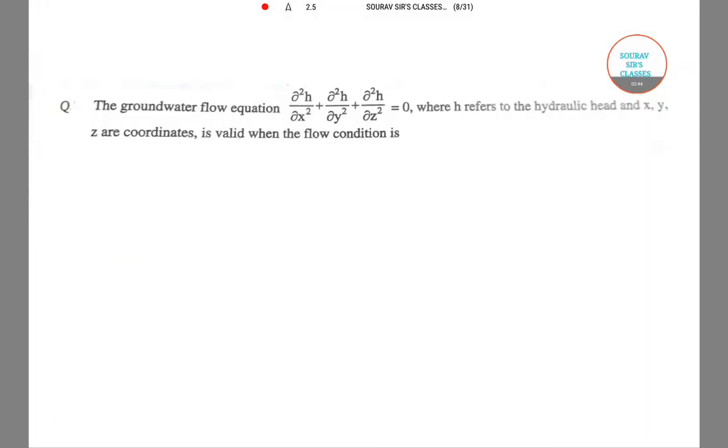Moving on to the next question. The groundwater flow equation has been provided to us - this is the left-hand side and the right-hand side equal to zero, where h is hydraulic head and x, y, and z are the coordinates. We need to find when the flow condition is valid.